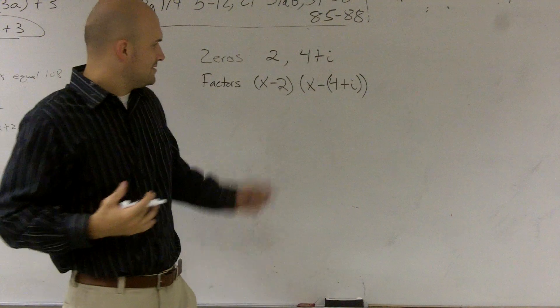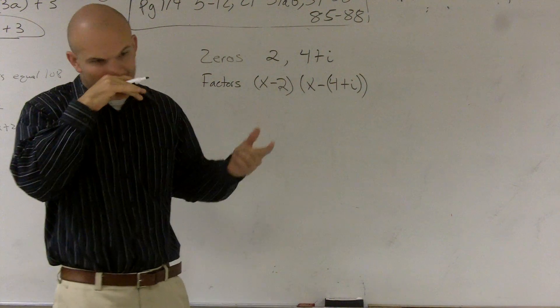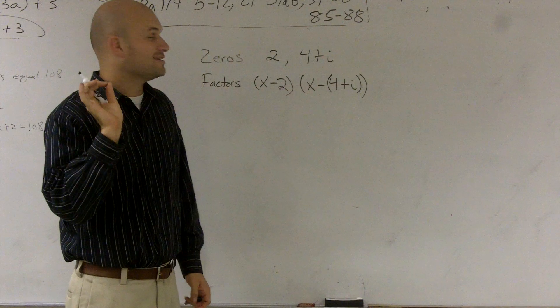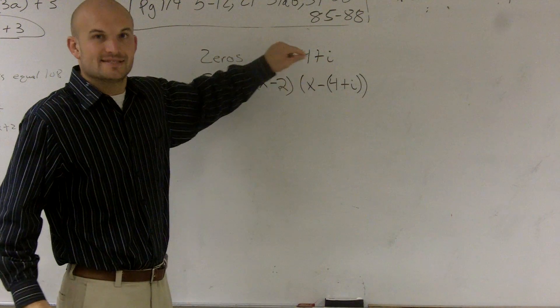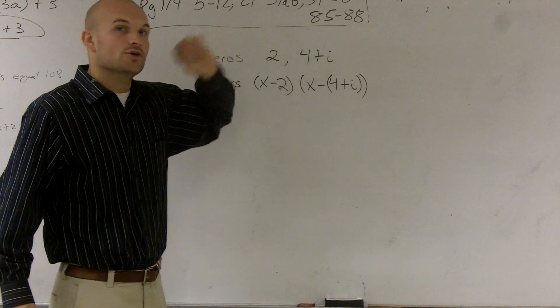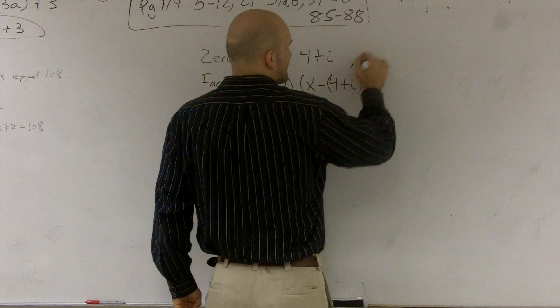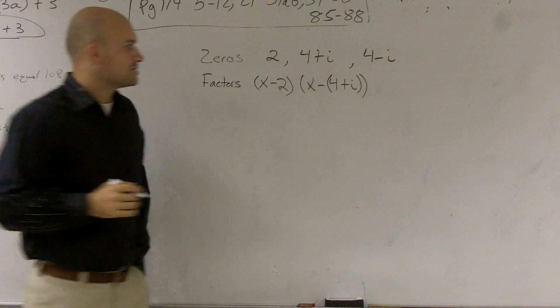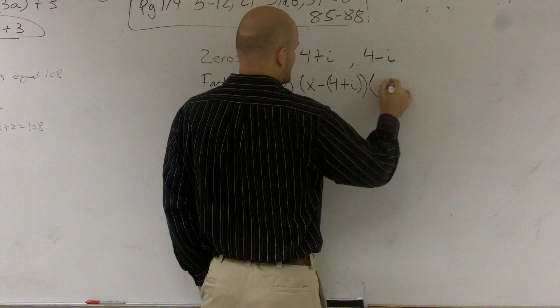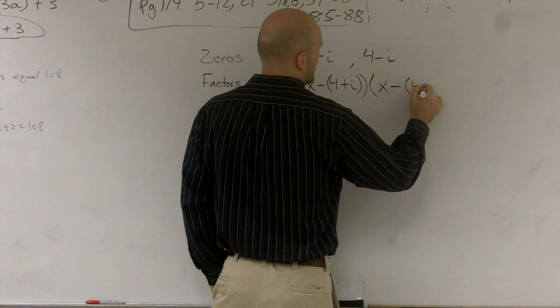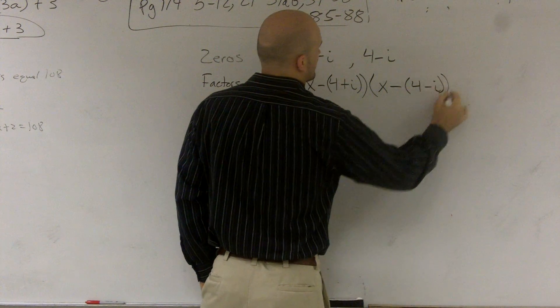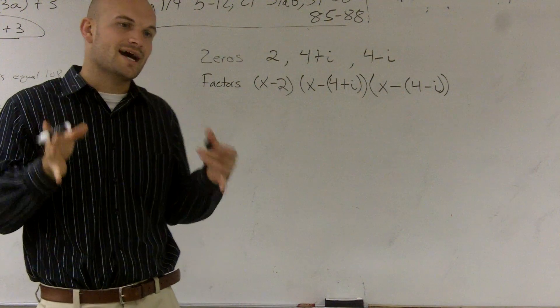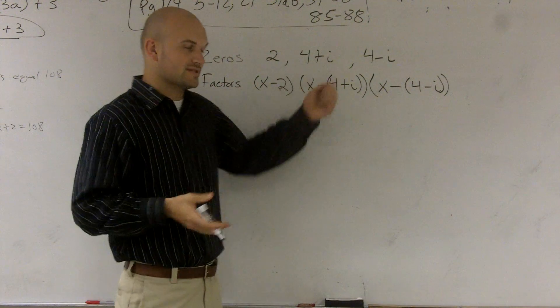Now, you can multiply this and you're going to get a polynomial, but it says they want a polynomial to the third degree. And the other thing you need to know is whenever you're given a zero as a complex number, you also know that the conjugate zero is also available. So therefore, I can write this as a factor as well: x-(4-i). So whenever given a complex number, also know that your conjugate of your complex number is also a zero.